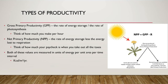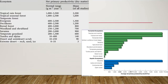How do we actually measure productivity? It's based on an area of land, usually per square meter, over a time interval — typically one year. The energy value is measured in kilocalories, so the unit is kilocalories per square meter per year. Productivity can also be measured in joules, so that's worth being aware of.